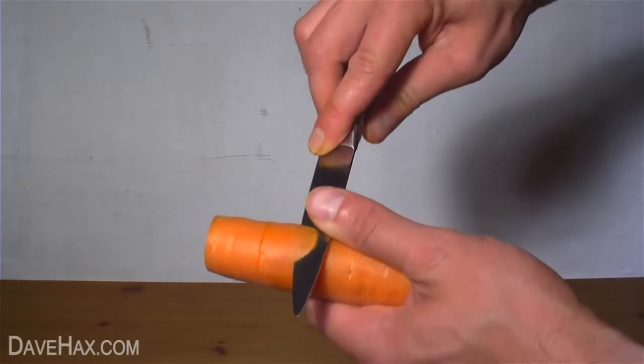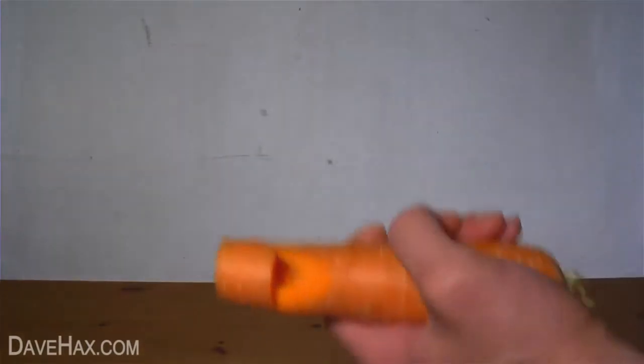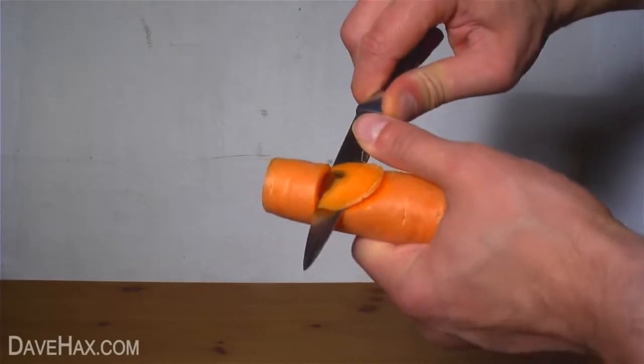Then drop the knife back another inch and cut a wedge out of the carrot. Keep going until you have something which looks like this.